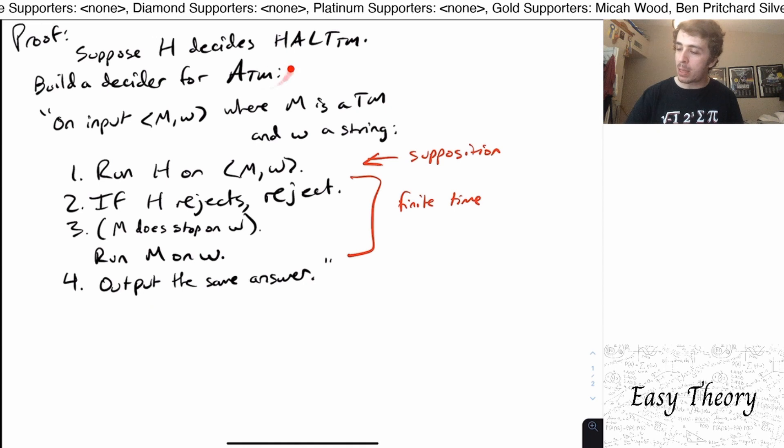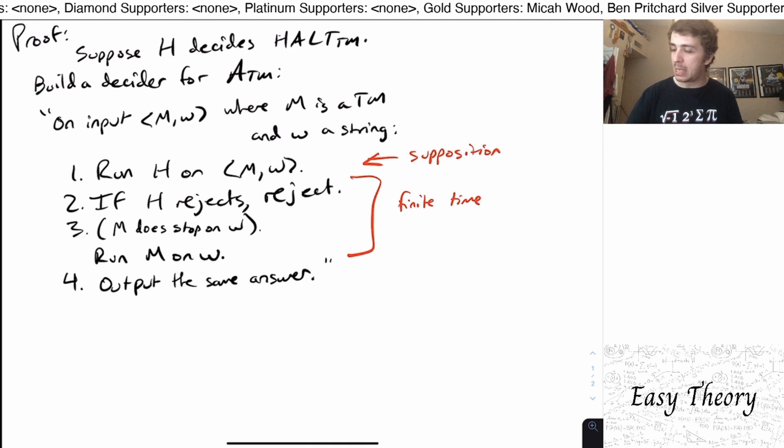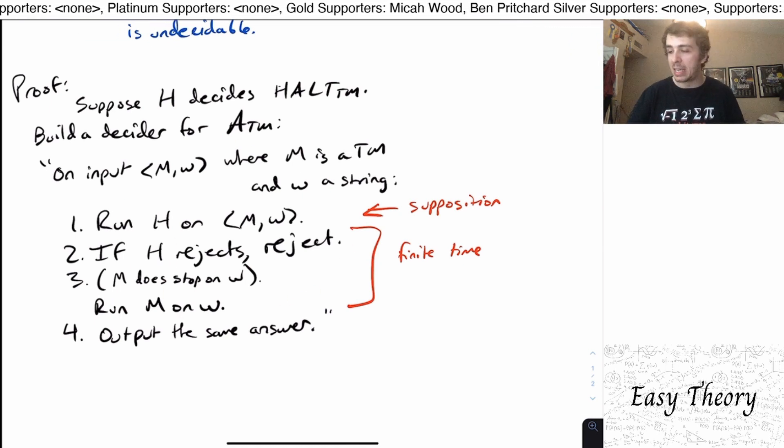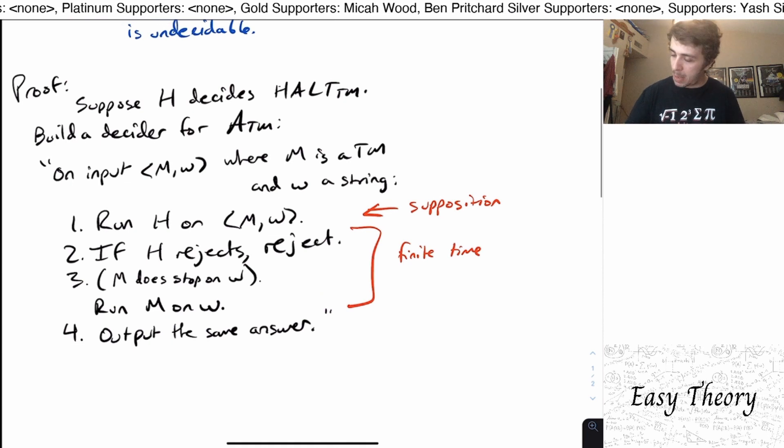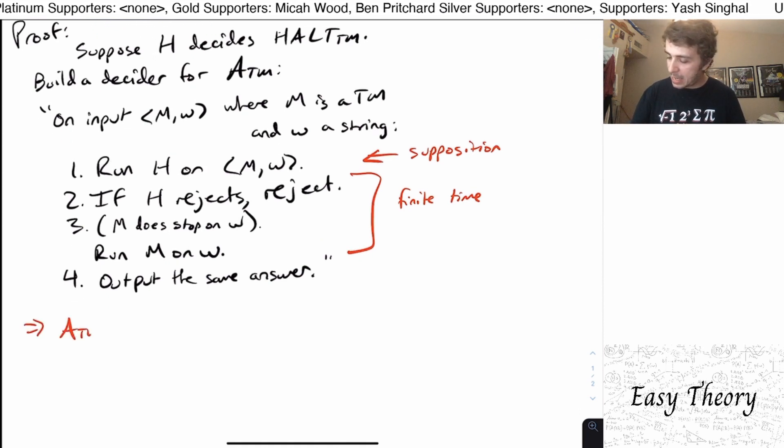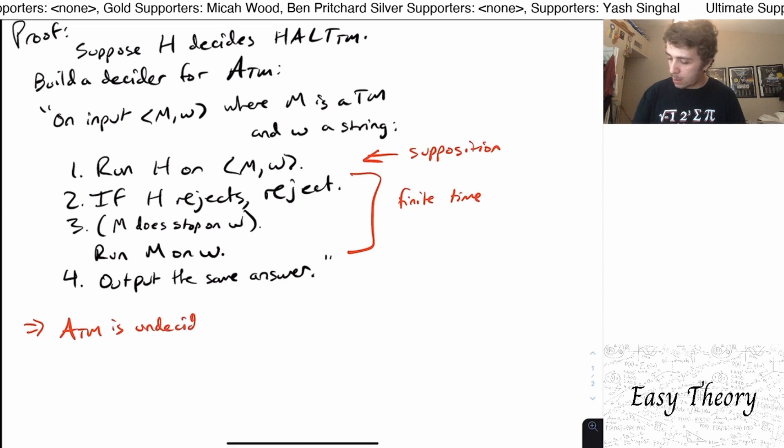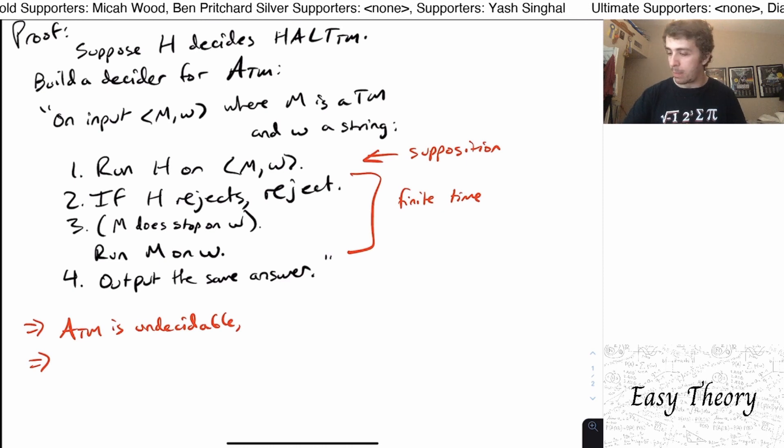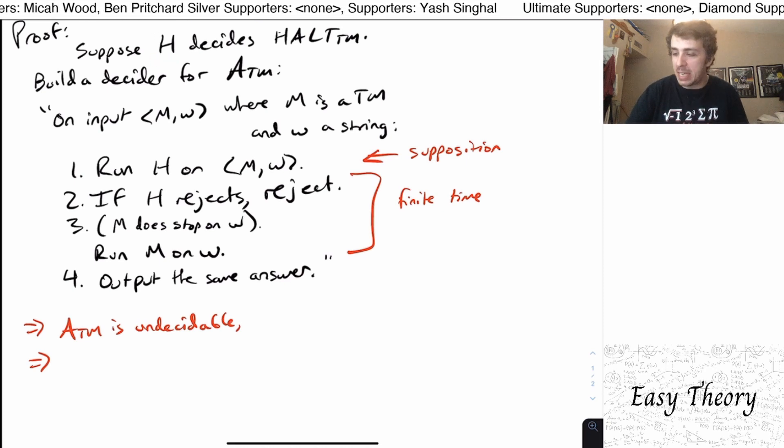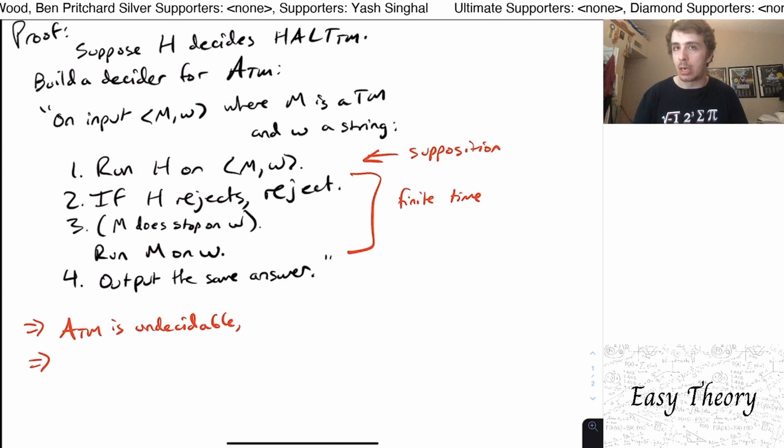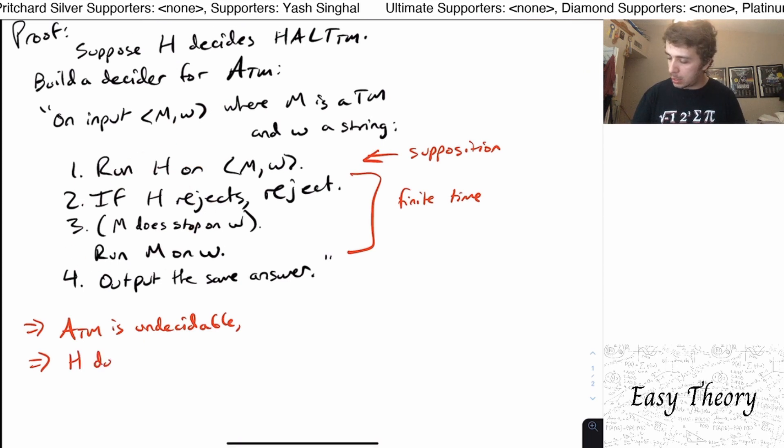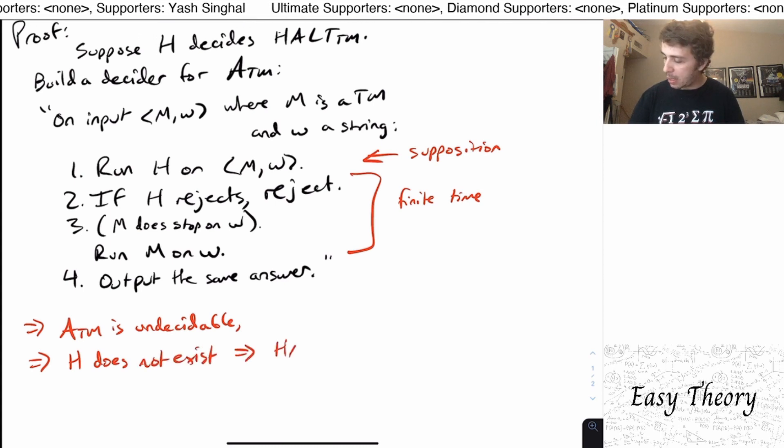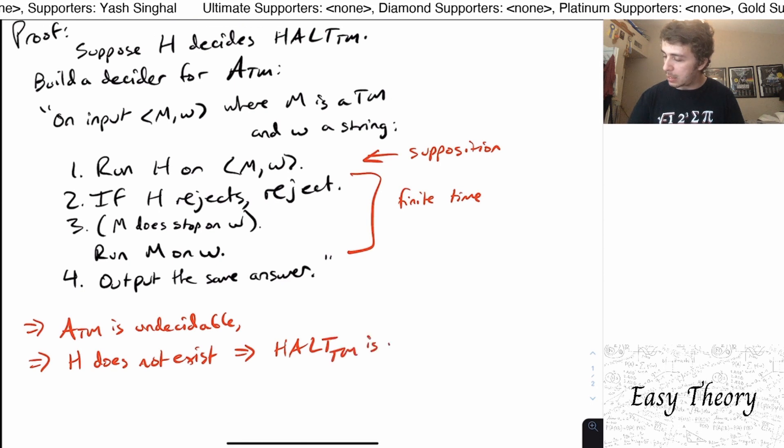So that would imply that ATM is decidable. Because if H is decidable, then we can build this machine that runs in a finite amount of time, which implies that ATM is decidable. But we know that ATM is undecidable. So this implies that the decider H here cannot exist because if it did, then we could build this machine, which is a contradiction. So this means that H does not exist, which implies that Halt TM is undecidable.